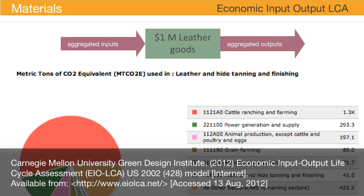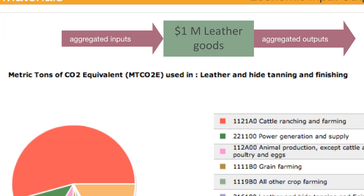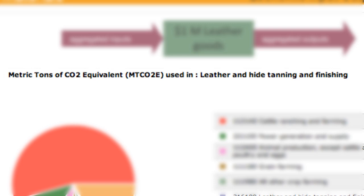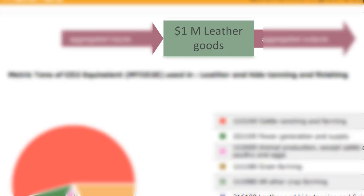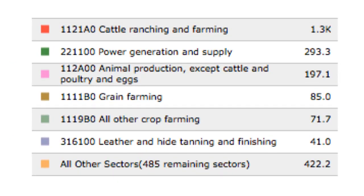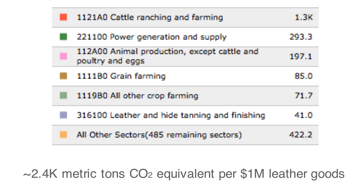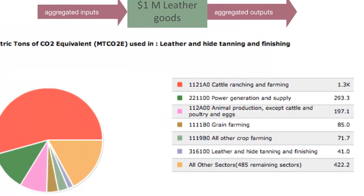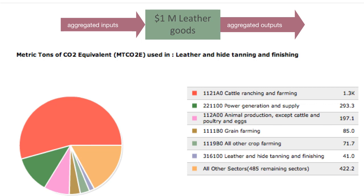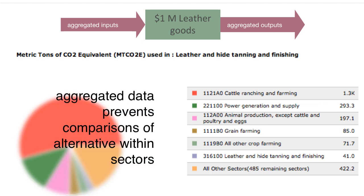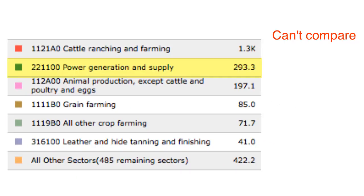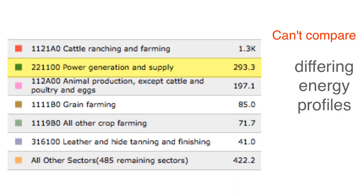The economic input-output method uses aggregated data from business sectors for the inputs to the particular product. This aggregated data is used to determine a particular output measure, such as metric tons of CO2 equivalent produced. In this example, one million dollars of leather goods are produced and require seven inputs from different industrial sectors, with an output of around 2.4 thousand metric tons of CO2 equivalent. This method provides a quick and approximate value, but since it is based on aggregates for industrial sectors, it does not allow designers to compare designs when the innovation is within the same industrial sector — for example, you cannot compare power generation for only renewable energy since the energy sector is aggregated across all energy resources.